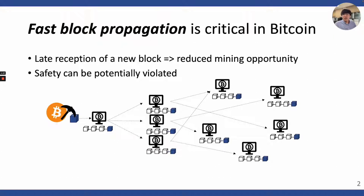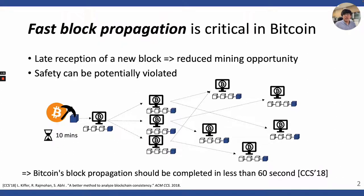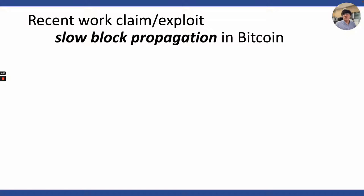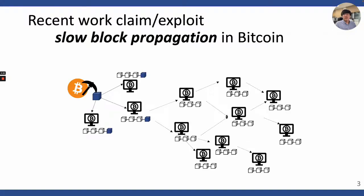In Bitcoin, one new block is discovered about every 10 minutes on average. With this 10-minute block time, earlier work in 2018 shows that block propagation time should be less than 60 seconds in order to maintain Bitcoin's consistency. Most people believed that Bitcoin had fast enough block propagation until very recently. However, a couple of papers published in the last few years claim that Bitcoin's block propagation is much slower than 60 seconds.